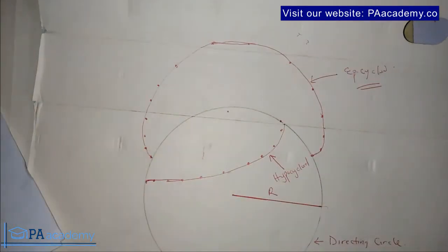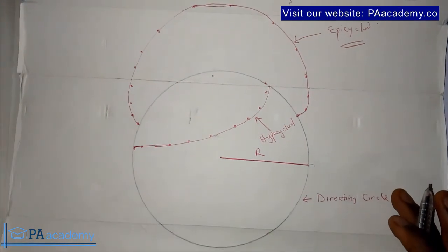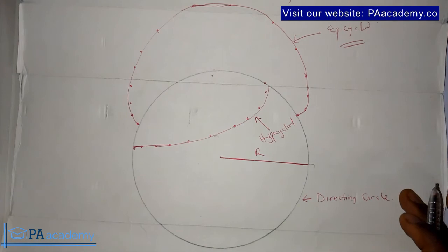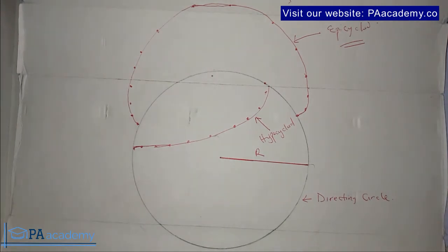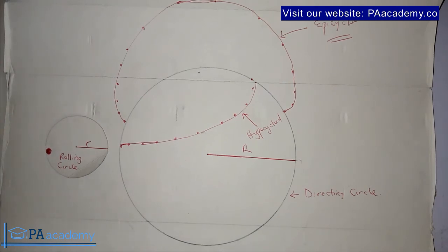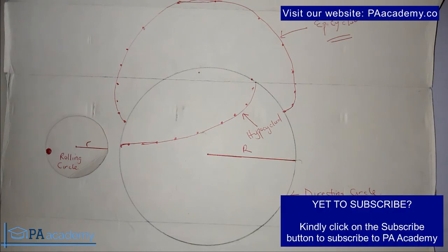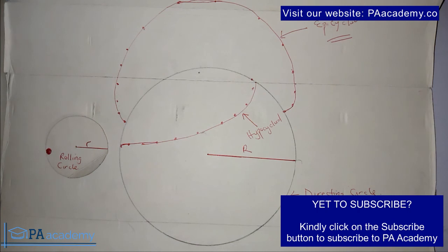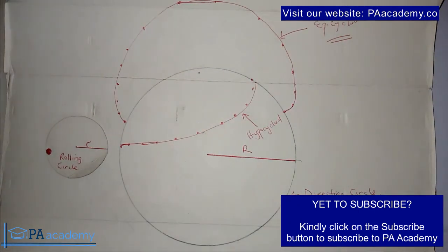If you find this video helpful, please give it a thumbs up. That covers the difference between epicycloid and hypocycloid. I'm going to leave a link in the description of this video showing you how to draw epicycloid and hypocycloid. I'll also leave links to other videos such as how to draw a parabola, a helix, a hyperbola, the involute of a circle, and how to draw a cycloid with tangents. If you have any questions, comments, or video requests, please leave them in the comment section below. Subscribe to PA Academy — it's absolutely free. Check our playlist on technical engineering drawing and our website at paacademy.co. See you all in another video!